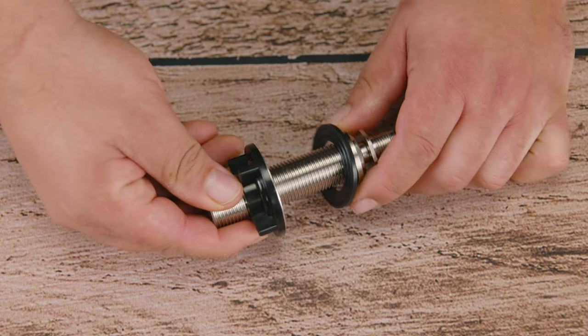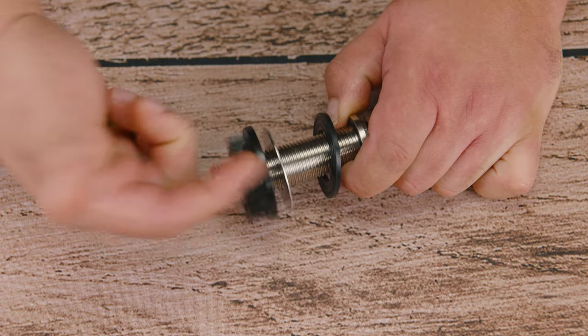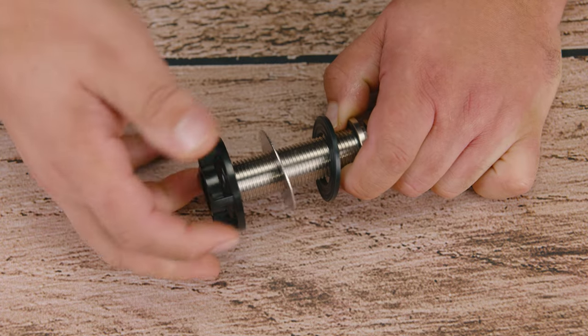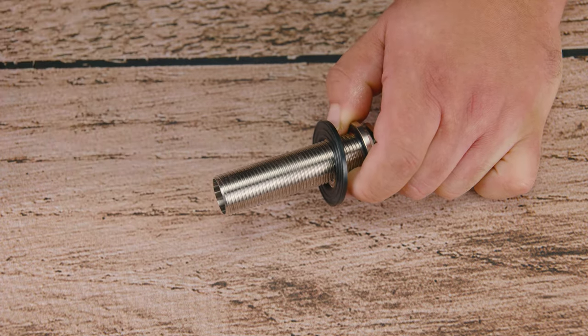So the first thing that we're going to do, we're going to take our shank and remove the nut, the O-ring and the washer. The next thing that you want to do is make sure you're installing this in your home.